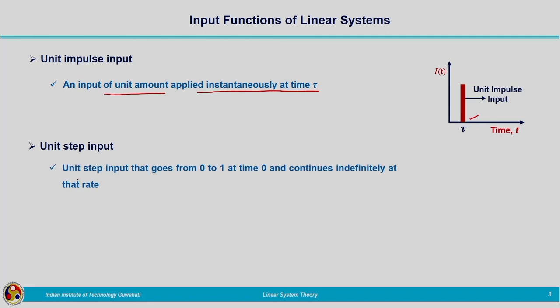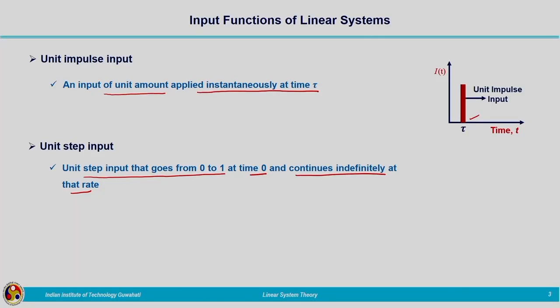The second type is unit step input, which goes from 0 to 1 at time t = 0 and continues indefinitely at that rate. At t = 0, it instantaneously increases from 0 to 1, and after that it continues at the same rate with no further change. Plotting step input on the y-axis and time on the x-axis, the input rises from 0 to 1 and then remains constant.